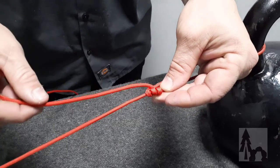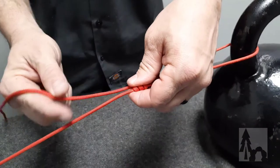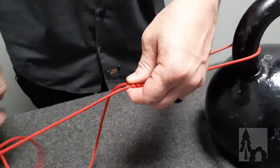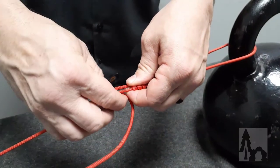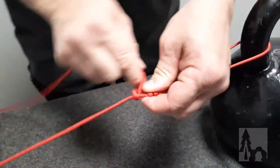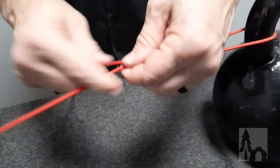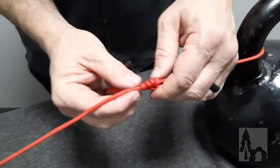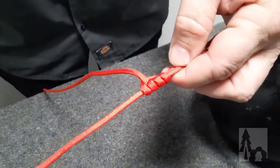I'm going to take my working end out of the loop and run it up along the standing part, cross over again, and then bring the line up through that new loop. And then just kind of dress that knot up by sliding that down. Tighten the whole thing up a little bit, and then you'll see four turns around the standing line.